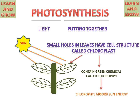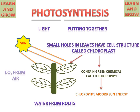Chlorophyll absorbs the sun energy which the sun gives to the plant, and water from the roots. The leaves take water from the roots and carbon dioxide from the air.